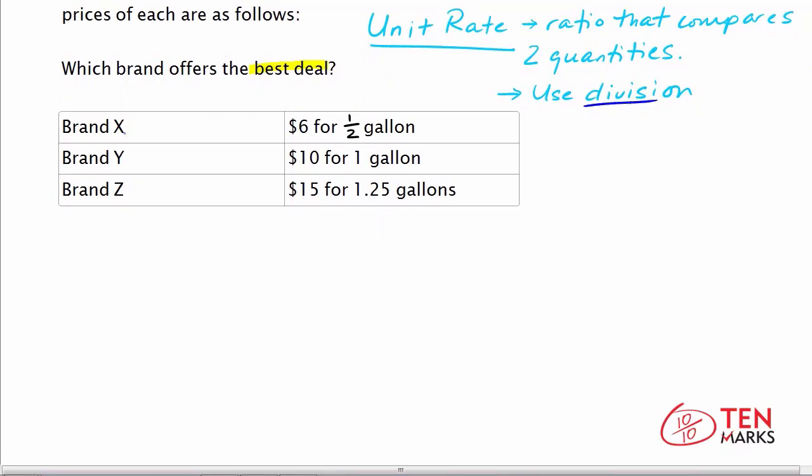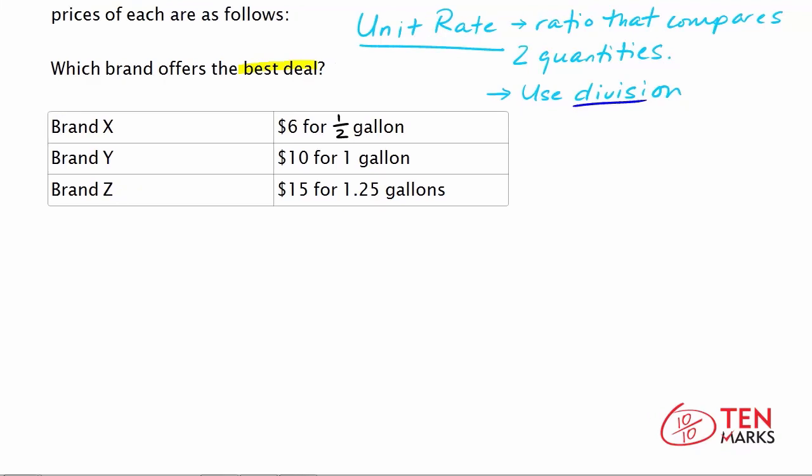So now we can see in the table that we have brand X, which offers a half of a gallon for $6. Brand Y, you get one gallon for $10. Brand Z, you get 1.25 gallons for $15. Let's begin with brand X.